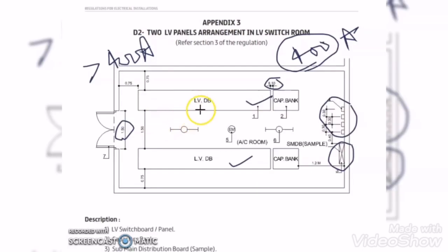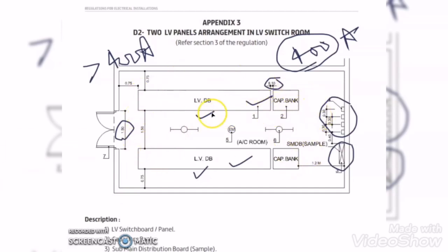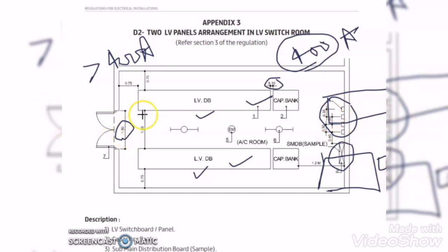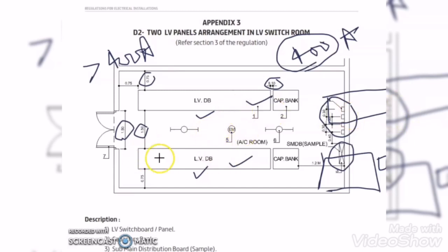You might have a question: suppose your building requires 4 LV panels — what is the DIVA regulation for more than 2 LV panels? We follow the same approach: place the LV panels and capacitor banks in the same manner, maintaining a panel-to-panel distance of 1.5 meters and a distance of 0.75 meter from the back side of the panel to the LV room wall. Even if you have 6 or 8 LV panels, you place them in the same manner by maintaining the minimum distances.